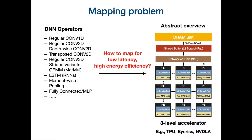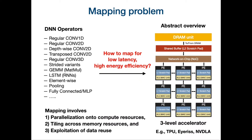Now we have DNN operators on one side and accelerators on the other side. The question is how do we map these operators effectively onto the accelerators for low latency and higher energy efficiency? This is because the efficiency of accelerators depends on the mapping strategies. A mapping at a high level involves three aspects: first, parallelizing the computations within the DNN operators onto compute resources; second, how do we tile the computations to fit into the memory hierarchy of the spatial accelerators; and third, how do we exploit the data reuse present in these computations and match it with the hardware reuse structures in the accelerators for low latency and higher energy efficiency.